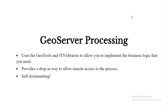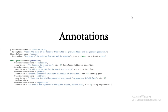Processing WPS in GeoServer uses all the GeoTools and JTS libraries to implement your business logic. It provides a drop-in way to allow remote access to that process, and it's self-documenting so I don't have to write any documentation for it either. Anything I need to do I can use my existing libraries for. I just write some annotations around the top of my process — I give it a title like 'pick and union', a description such as 'return the union of the features that fulfil the provided filter that are in the geometry passed in', and specify the result type — a geometry. The type of thing you get back might be lines or points; I'm just going to union it together.